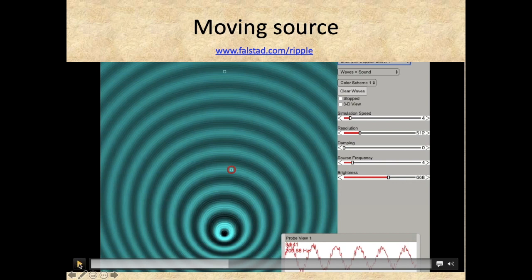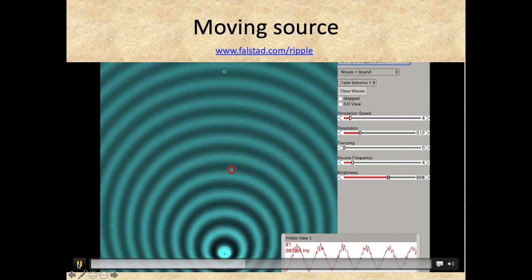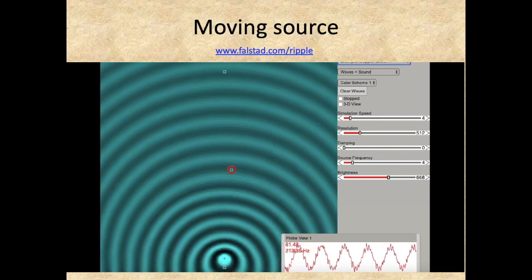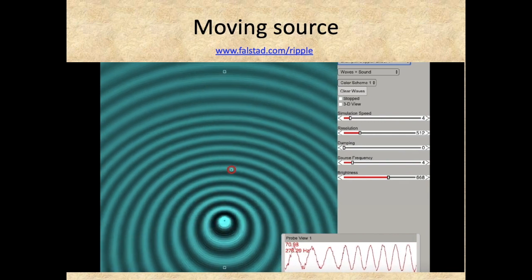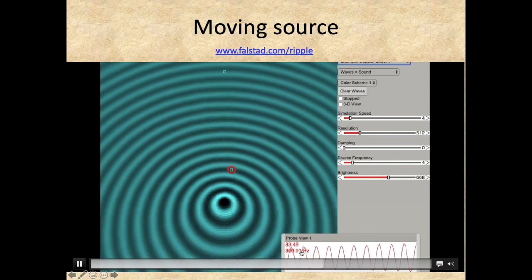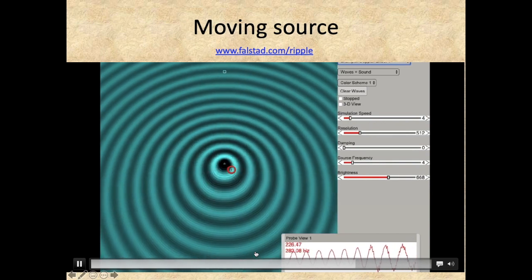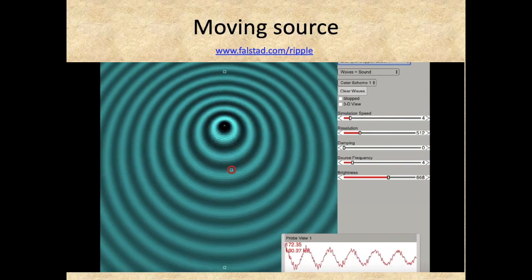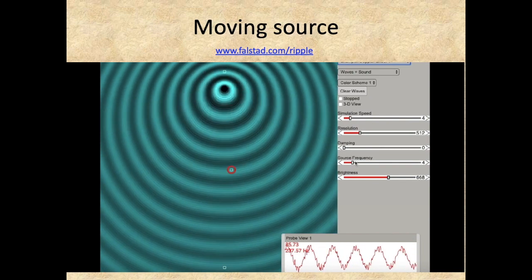Let's watch as the source moves in the opposite direction again. The source starts approaching the observer and we're measuring 309 Hz, then the source starts moving away and we measure a much lower frequency as shown on the probe view.